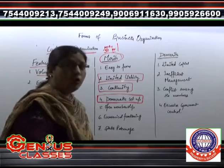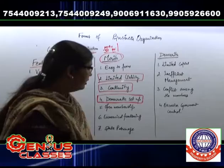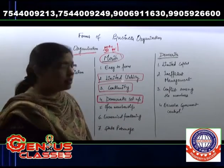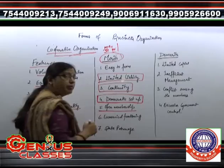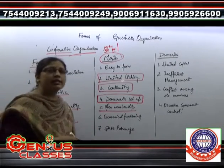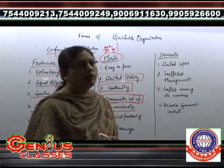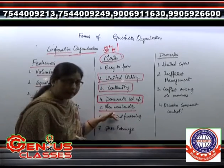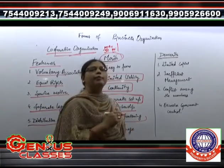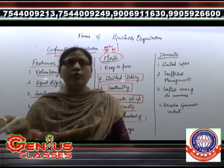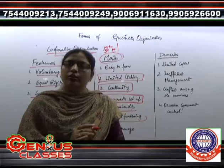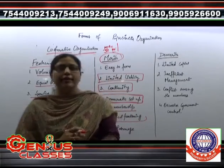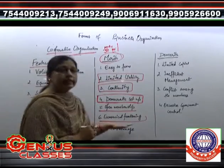Next point is open membership. When we are talking about easy formation, it is clear that we provide open membership to cooperative organizations. Whoever the individual has a common interest with the organization, they can join that organization. This is a very important merit for us. Next we come to economical function — it's economical because we are eliminating middlemen. We are purchasing from direct manufacturers, and as a result the best and cheap quality of material is purchased and provided to the customer.